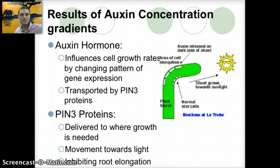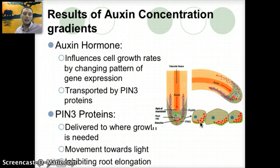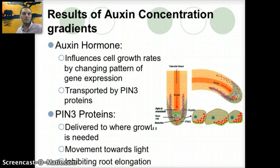Similar things can happen in the root system. If a plant root is on its side, gravity causes organelles to accumulate on the lower side of the cell. This allows the PIN3 proteins to direct auxin to be transported to the bottom portion of the cell. This high concentration of auxin inhibits root cell elongation, so the top cells elongate at a higher rate than the bottom cells, causing the root to bend downward. The pattern of auxin effect is opposite in the shoot versus the root: in the shoot, auxin promotes elongation, while in the root it actually inhibits it.